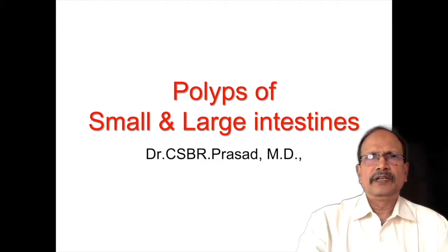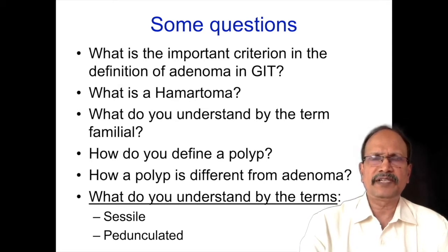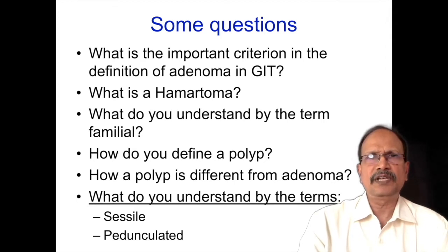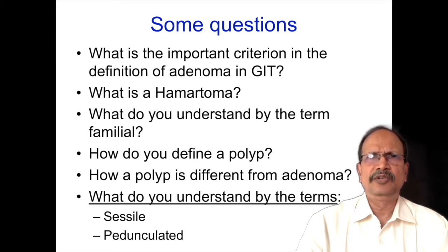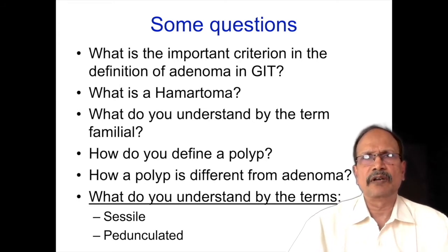Hello students. Today we are going to deal with polyps of the intestines. Before going into the actual topic, let us answer some questions. What is the important criterion in the definition of adenoma in GIT? If you look at adenomas in any other part of the body, it is a benign glandular neoplasm. But in GIT, another criteria is added — to call something an adenoma in GIT, it should have what is known as dysplasia. Dysplasia is a requisite to call any lesion an adenoma in GIT.